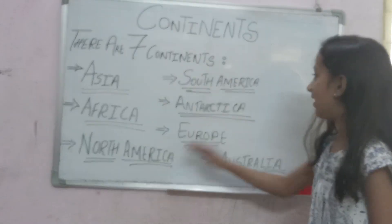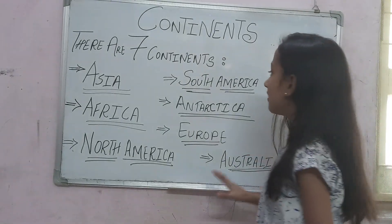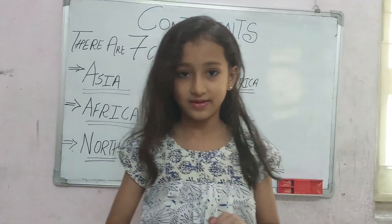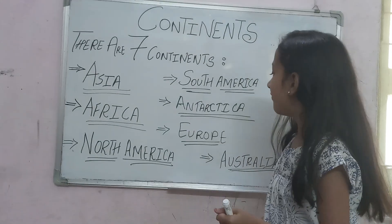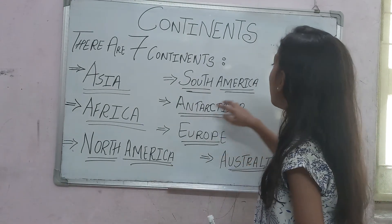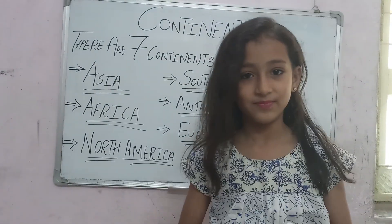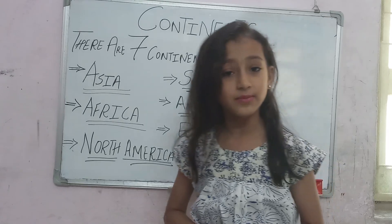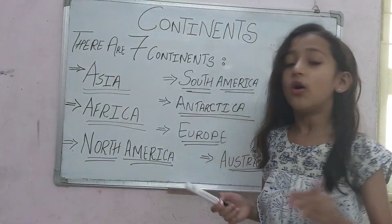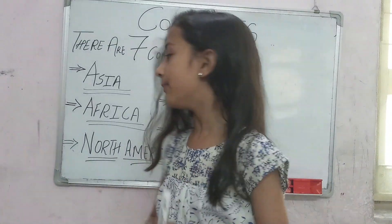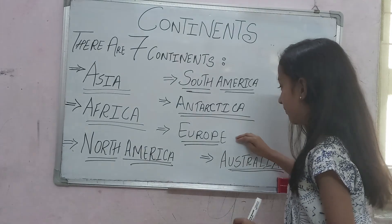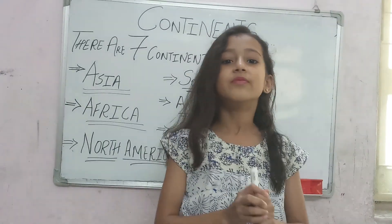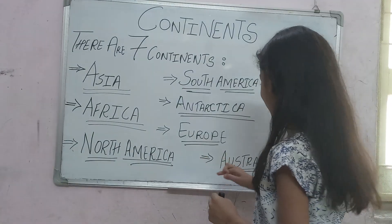North America and South America are joined together. Antarctica — there are no settlements for humans here because of its extremely cold temperature. Europe and Asia are joined, so they are sometimes called Eurasia.